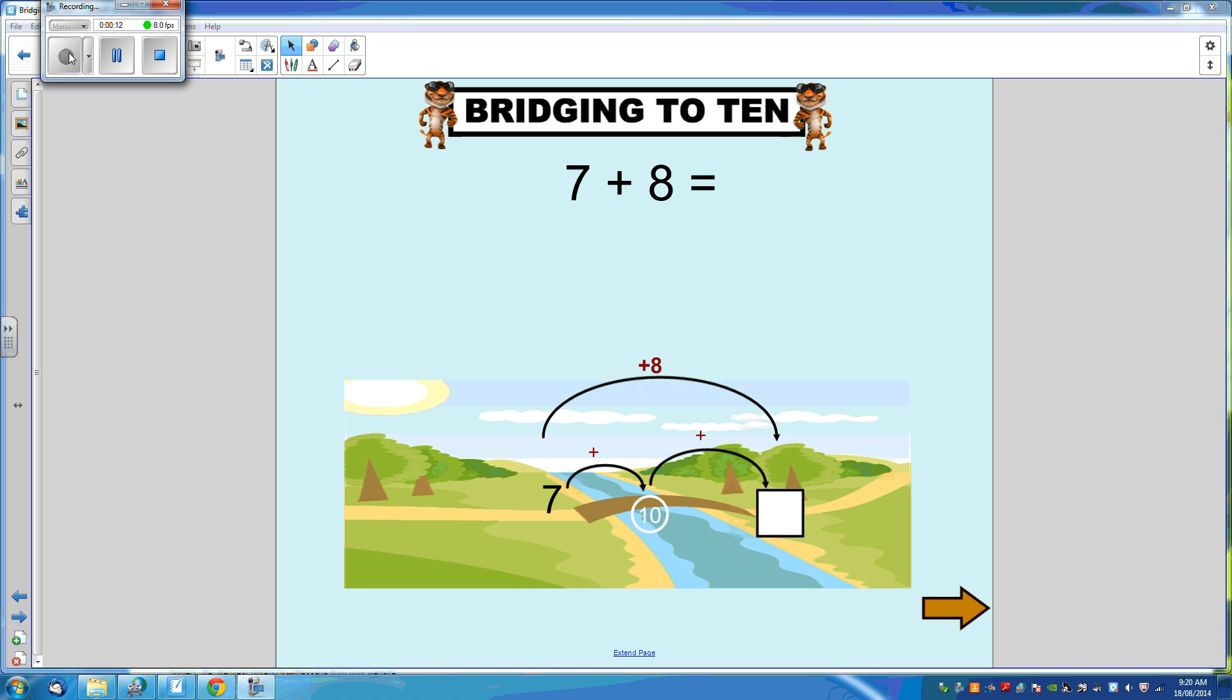7 plus 8. Here you can see that we've got our bridge set up. It's like a number line. The trick is that with bridging to 10 you need to stop once on the bridge at a decade.